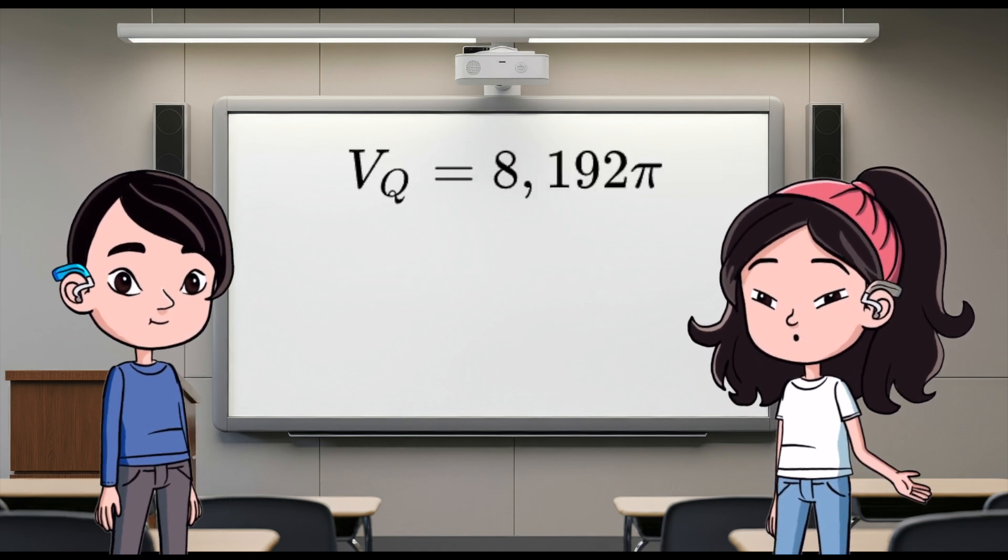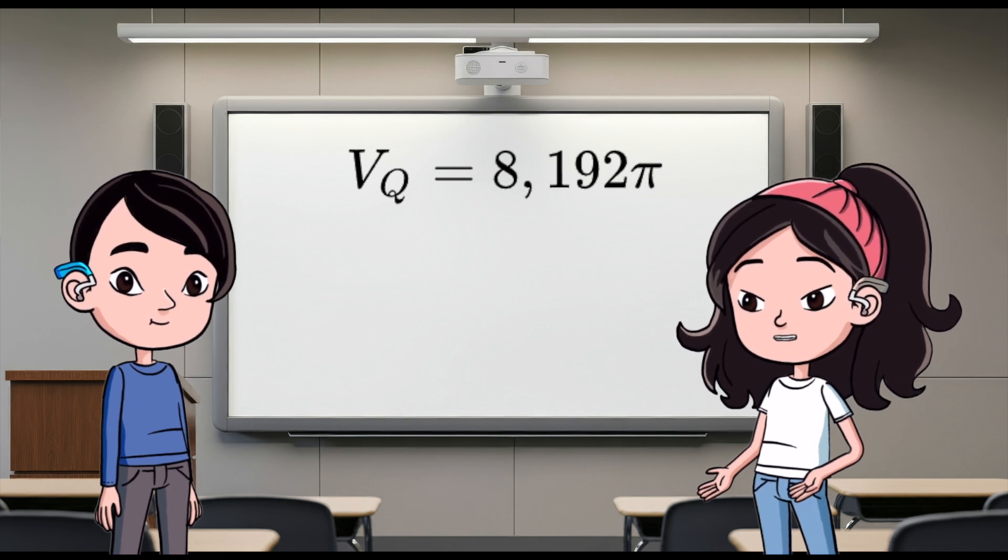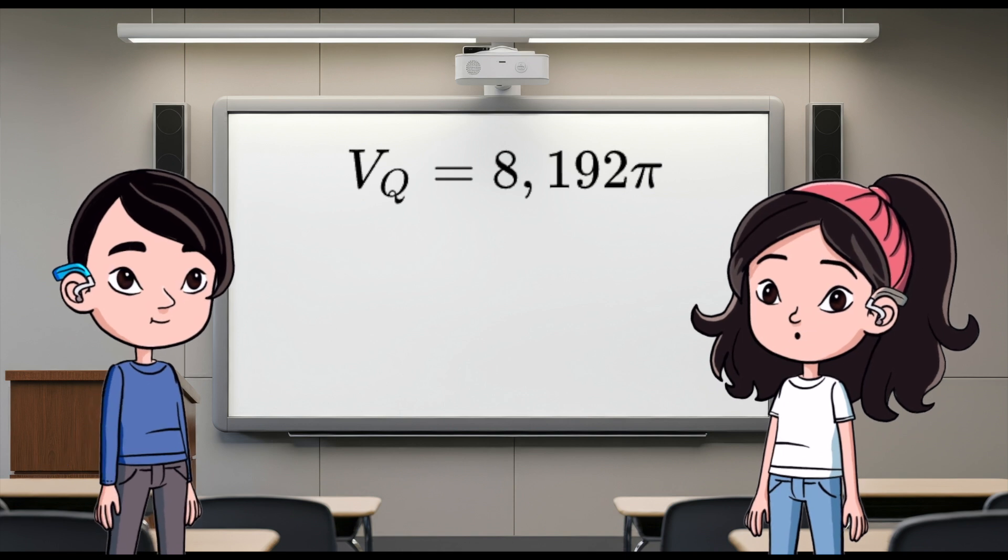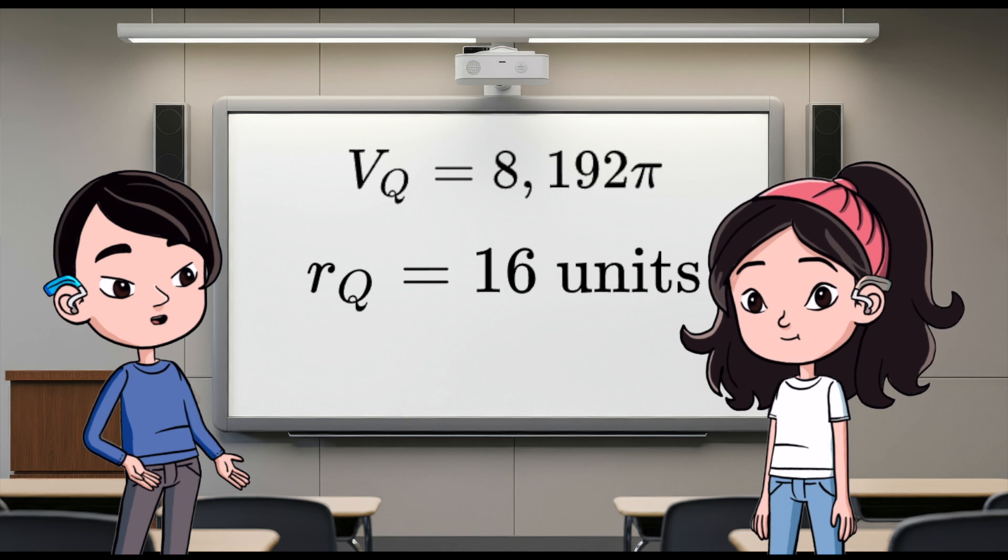So, for cylinder Q, we have the volume V sub Q equals 8,192π cubic units. We need to find its radius and height. Exactly. Maybe let's assume the radius r sub Q is double that of cylinder P. So, r sub Q equals 16 units.